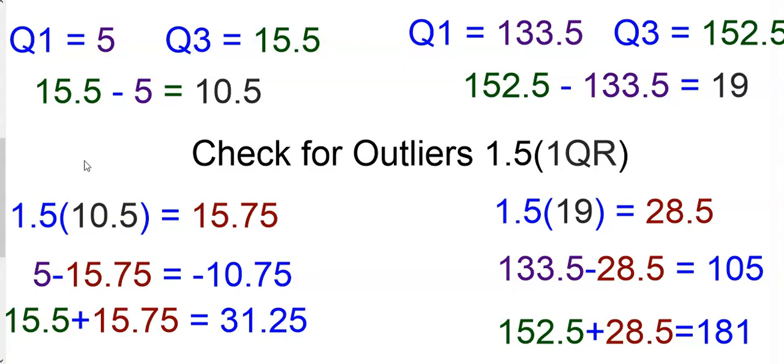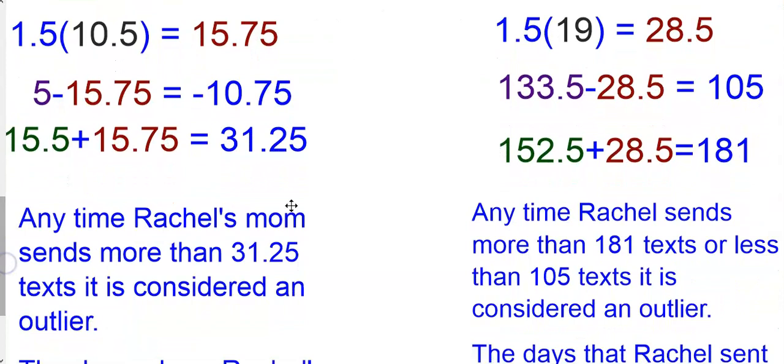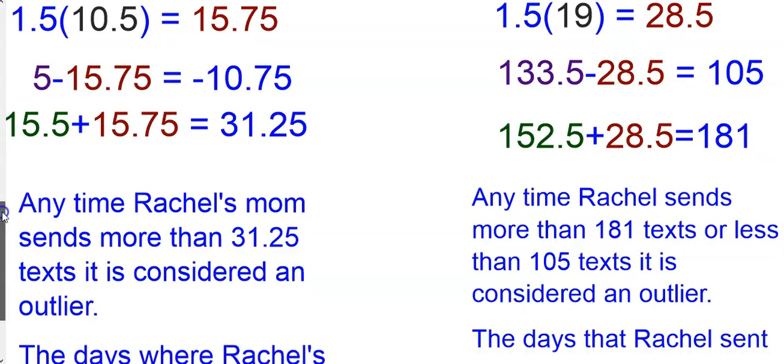So the rule that we'll use is 1.5 times the interquartile range IQR. So let's start by applying this rule. For Rachel's mom, we have 1.5 times the interquartile range, and her interquartile range is 10.5. So 1.5 times 10.5 is 15.75. What we do with this value is we subtract it from the first quartile, and we add it to the third quartile. So what this is telling us is any time that Rachel's mom sends more than 31.25 texts or less than negative 10.75 texts, which doesn't make a whole lot of sense. So we'll just talk about any time she sends more than 31.25 texts, it's considered an outlier. So it's unusual for her.